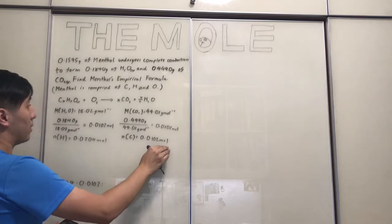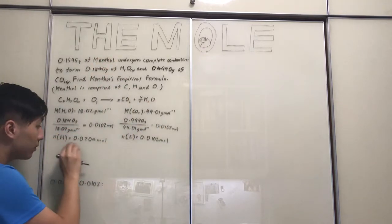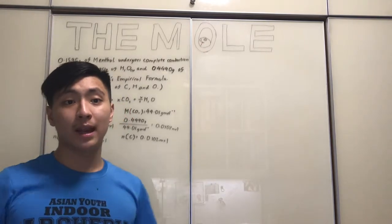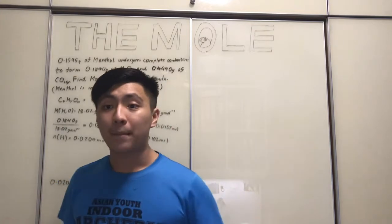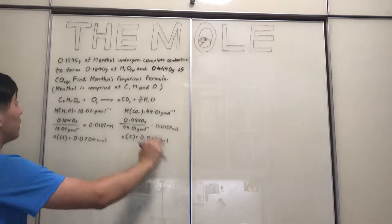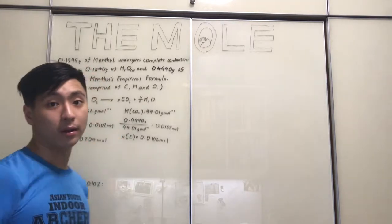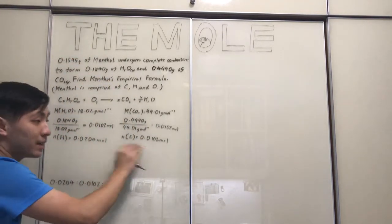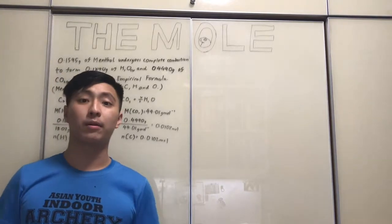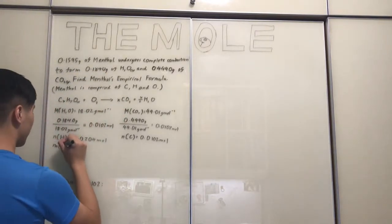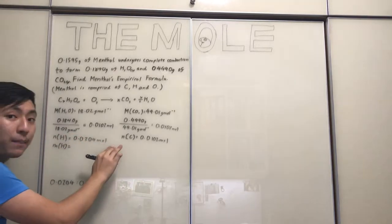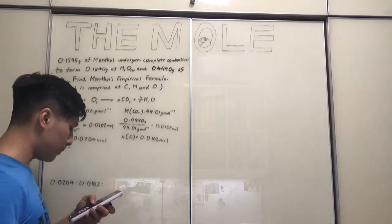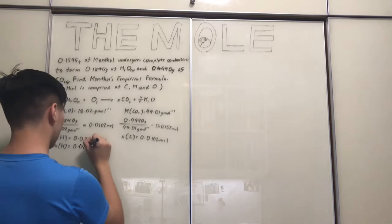Since we know the moles of carbon and hydrogen in menthol, we can use the molar mass relationship to calculate the mass that carbon and hydrogen each take up in menthol. The mass of hydrogen is 0.0204 moles multiplied by its molar mass, giving approximately 0.0206 grams. For carbon, it's 0.0102 moles multiplied by 12.01 grams per mole, giving 0.123 grams.